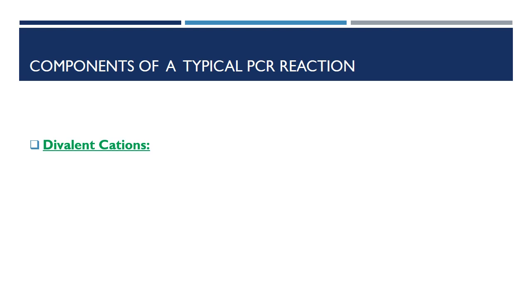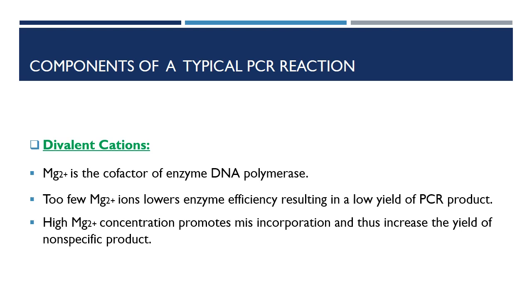Divalent cations are also important buffer components. Magnesium chloride affects primer annealing and is very important for enzyme activity. Magnesium requirements will vary with each reaction because each dNTP will take one magnesium atom. Furthermore, the presence of EDTA or other chelators will lower the amount of magnesium available for the enzyme. Too few magnesium ions lower enzyme efficiency, resulting in a low yield of PCR product. Overly high magnesium concentrations promote misincorporation and increase the yield of non-specific products. Lower magnesium concentrations are desirable when fidelity of the PCR is critical.